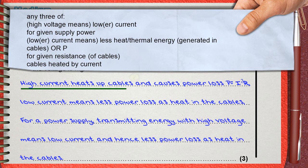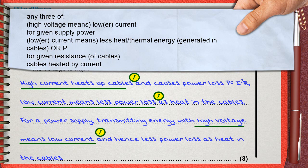Actually we said that high current heats up cables. This is one mark. We also mentioned that low current means less power loss. This is the second mark. And we mentioned that high voltage means low current. This is the third mark. This is a complete answer for the question.